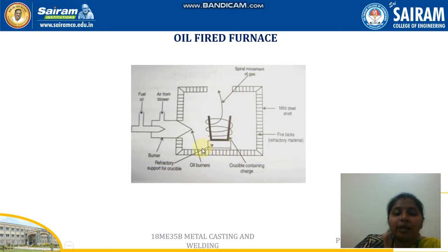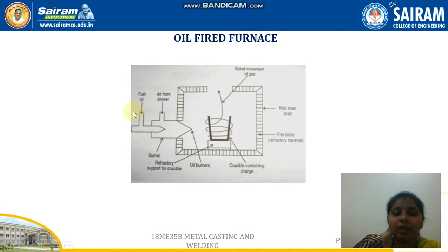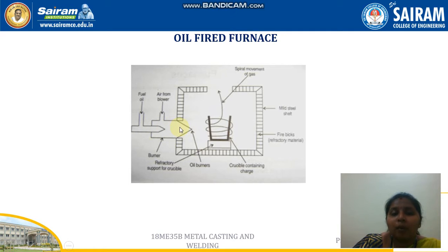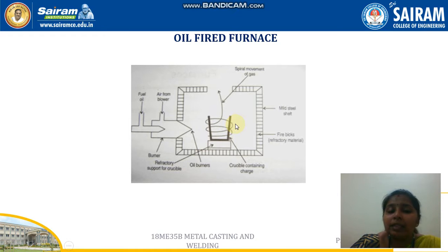There is a refractory lining inside, and above the pedestal the crucible is kept. The raw materials to be melted — that is the ingot — are placed in the crucible. Here there is a burner where oil supply and air are supplied. The burner is switched on, oil is supplied, and a blower is also given to intensify the heat produced, which reaches the crucible and produces gases that result in melting of the raw material.